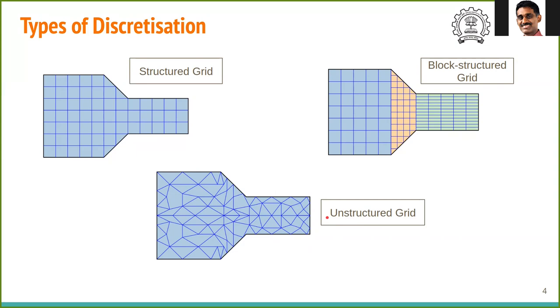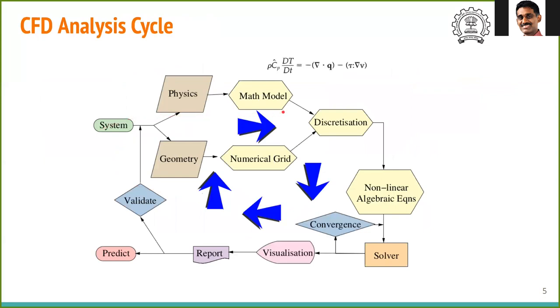CFD analysis is not a start-to-end one-way process. It is actually a cycle and an iterative process. Let us say we have a complex fluid system we want to simulate on a computer. First, we have to identify the important physics of the problem. That is to identify the appropriate transport phenomena. More often than not, we do not know which are the essential physics. That is why we go through this entire process in a cycle.